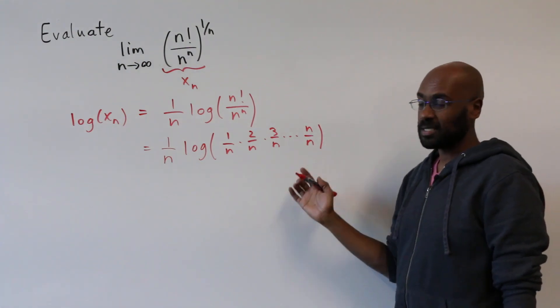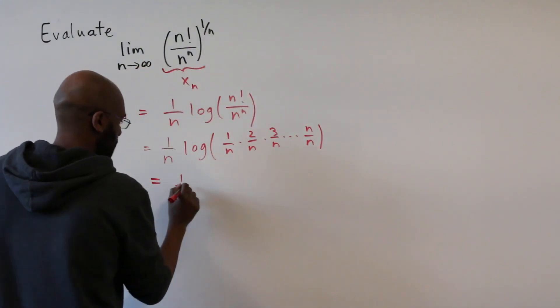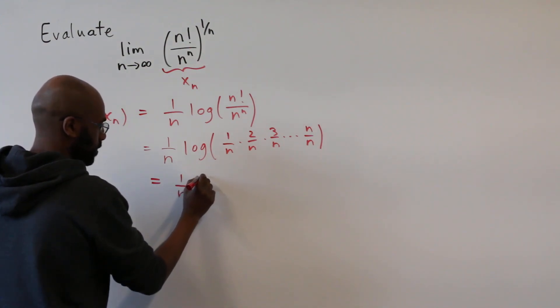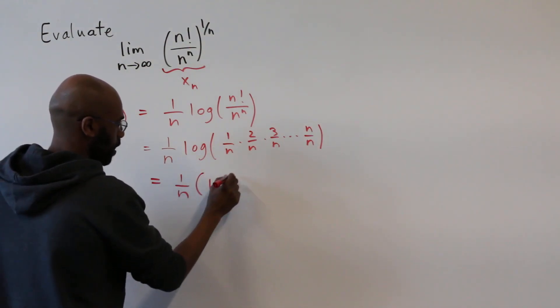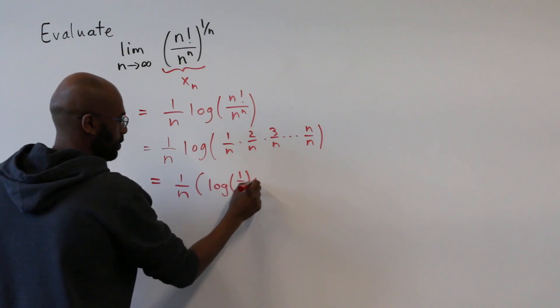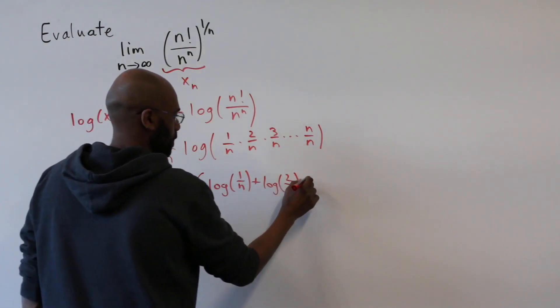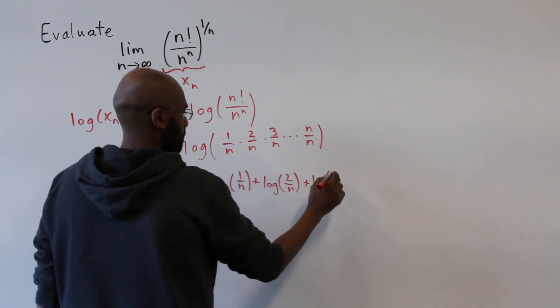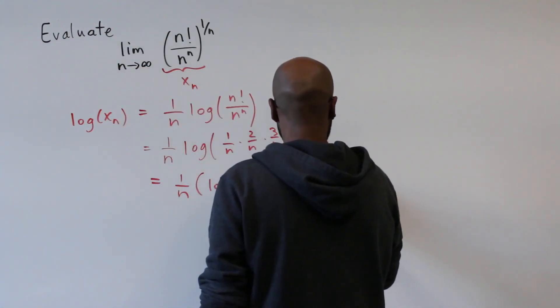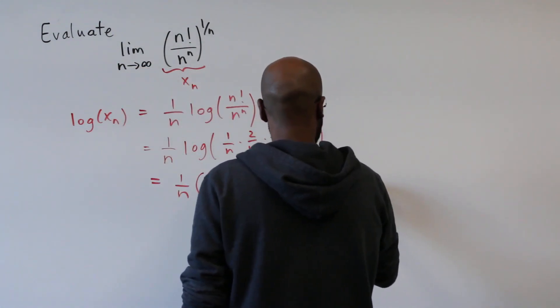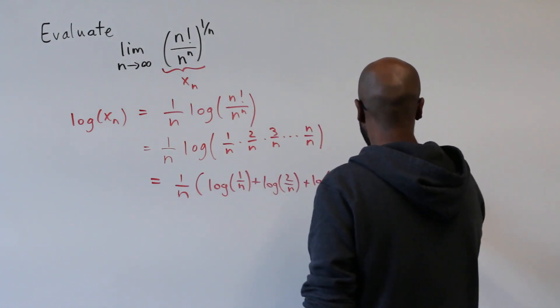And since we're taking the logarithm of a product, we can write this as a sum of logarithms. So this is 1 over n times the sum of log 1 over n plus log 2 over n plus log 3 over n, all the way to log n over n.